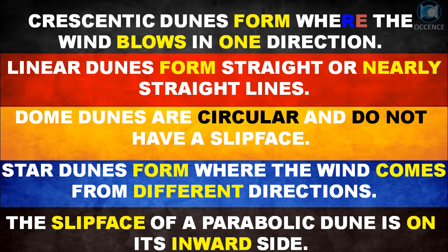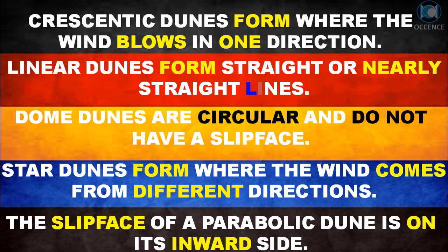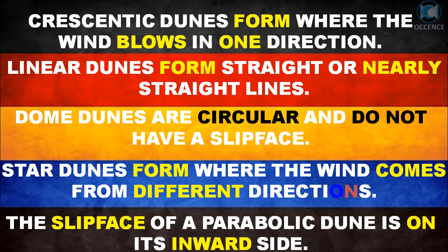Crescentic dunes form where the wind blows in one direction. Linear dunes form straight or nearly straight lines. Dome dunes are circular and do not have a slip face. Star dunes form where the wind comes from different directions. The slip face of a parabolic dune is on its inward side.